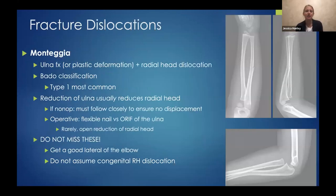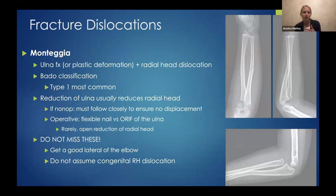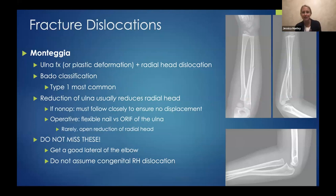Moving on to fracture dislocations — these are the ones you really don't want to miss, and unfortunately they often are missed: Monteggia fractures. This can be a fracture of the ulna or a plastically deformed ulna that pushes the radial head out. The Bado classification — type 1, anterior dislocation, is the most common. Usually if you reduce the ulna, the radial head follows along. You can sometimes miss this because if the ulna is plastically deformed and not clearly broken, it can look like a congenital radial head dislocation.